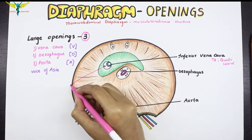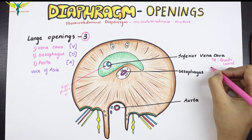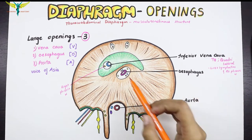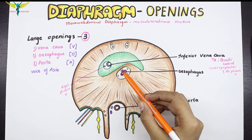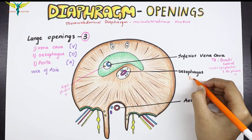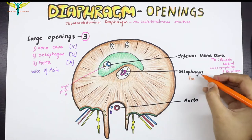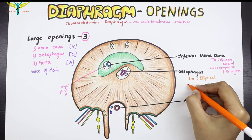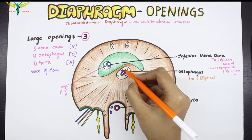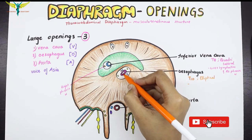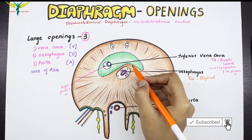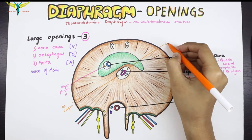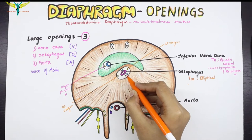Coming to the esophageal opening — this opening is present at the T10 vertebral level and the shape of this opening is elliptical. The structures that pass through this opening are the esophagus, both vagal trunks (the left vagus and the right vagus), and the left gastric vessels.